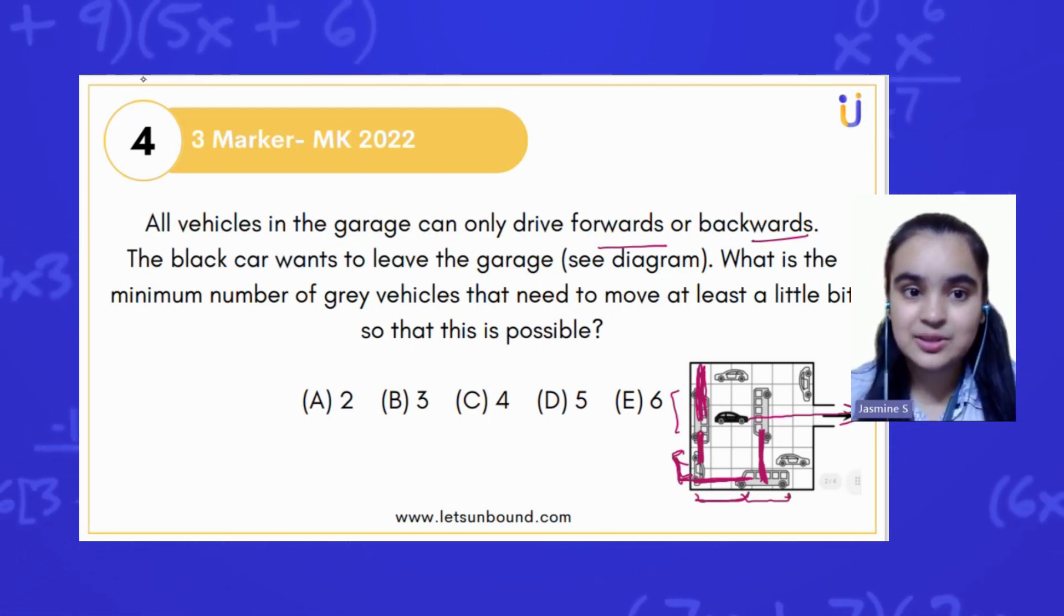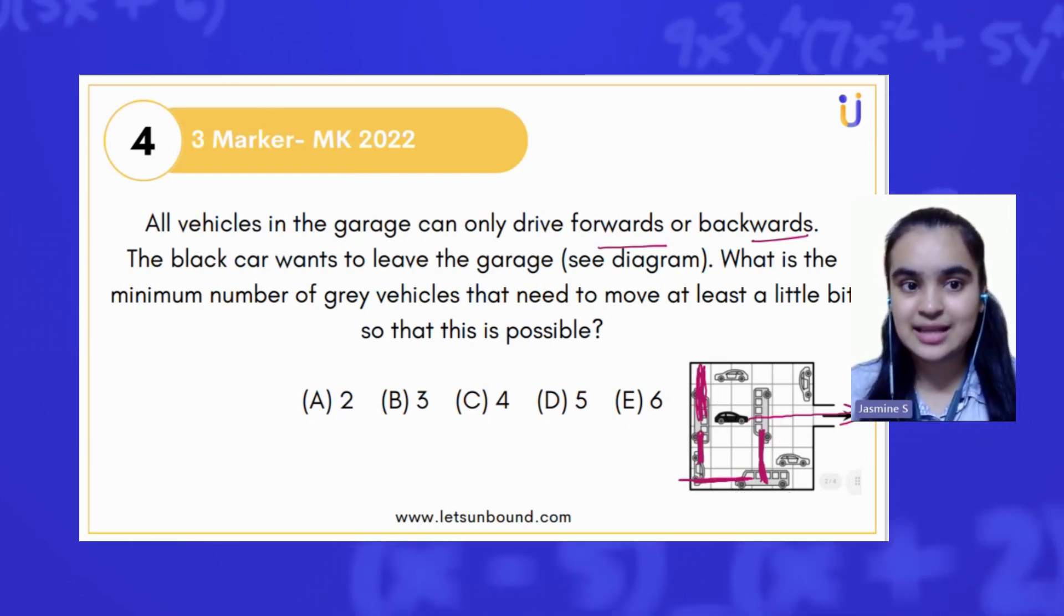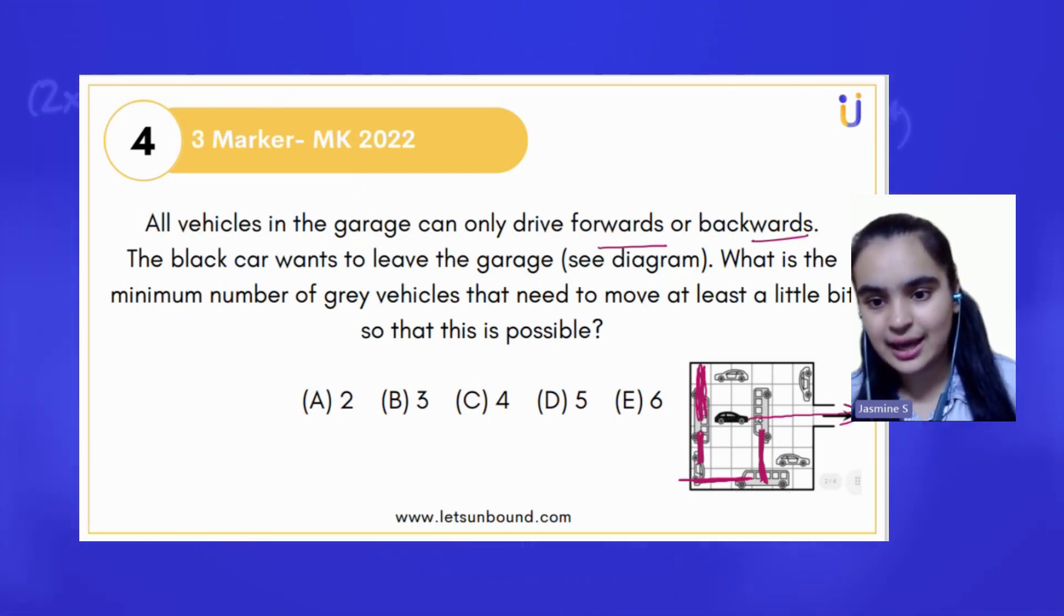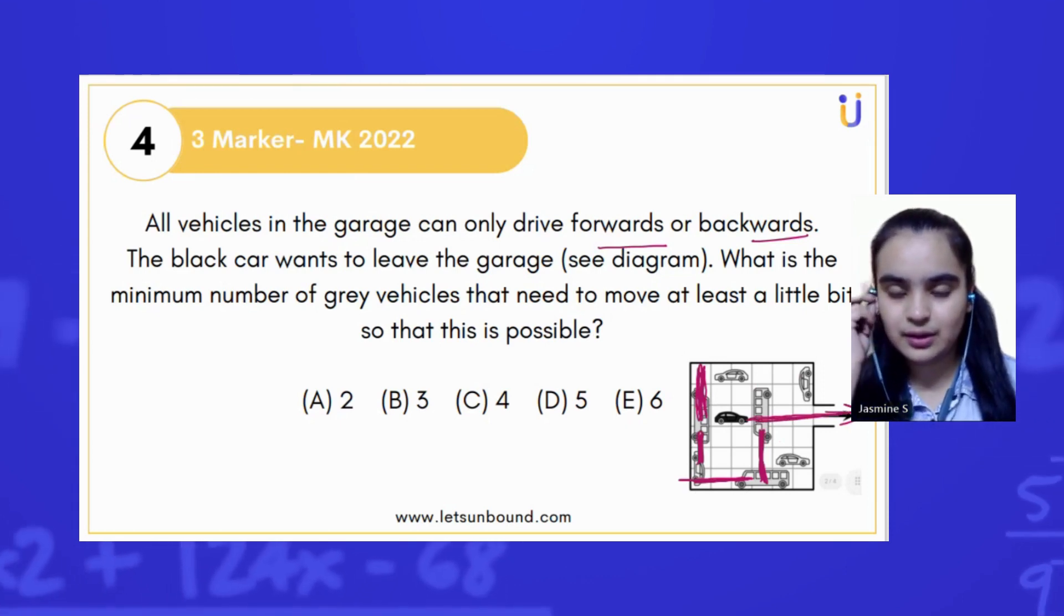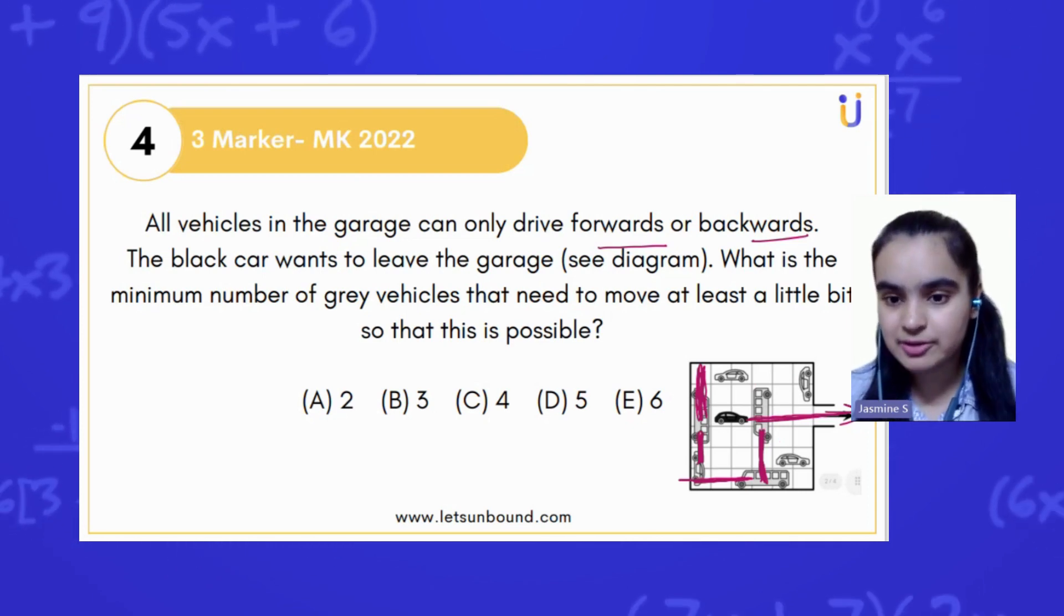And now, the positions of each and every car is fine and the black car can go out, because that space is actually empty. So, what is the answer? What is the minimum number of gray cars that we have moved?